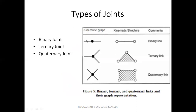Regarding joints: a binary joint is formed by a combination of two binary links joined at one point. A ternary joint is the combination of three links connected at one point. A quaternary joint is the joining of four links at one single point. So these are the basic types of joints — binary where two links are joined, ternary where three links are joined, and quaternary where four links are joined at one end.